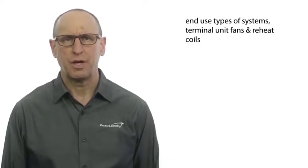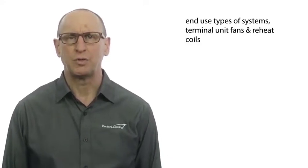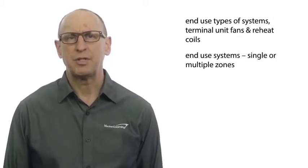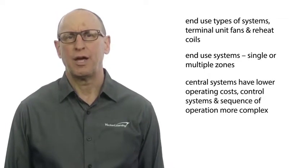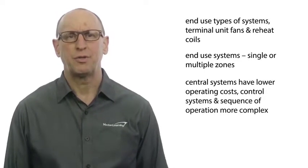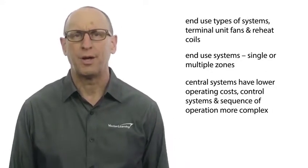Subsystems may also include end-use types of systems, such as terminal unit fans and reheat coils. End-use systems can be single or multiple zones. Typically, these central systems will have lower operating costs, but their control systems and sequence of operation will be more complex.